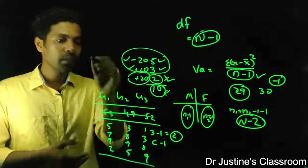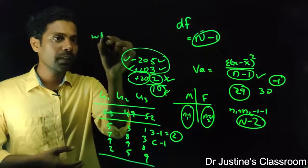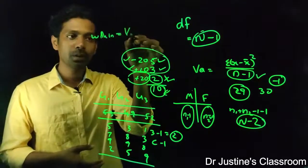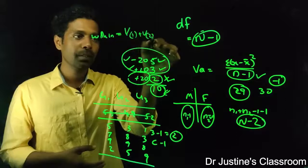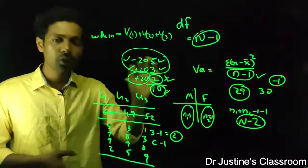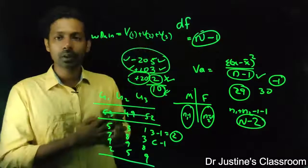This is the within group variance. Within group variance equals variance of the first group plus variance of second group plus variance of the third group. Variance within each group, this is the total within group variance.